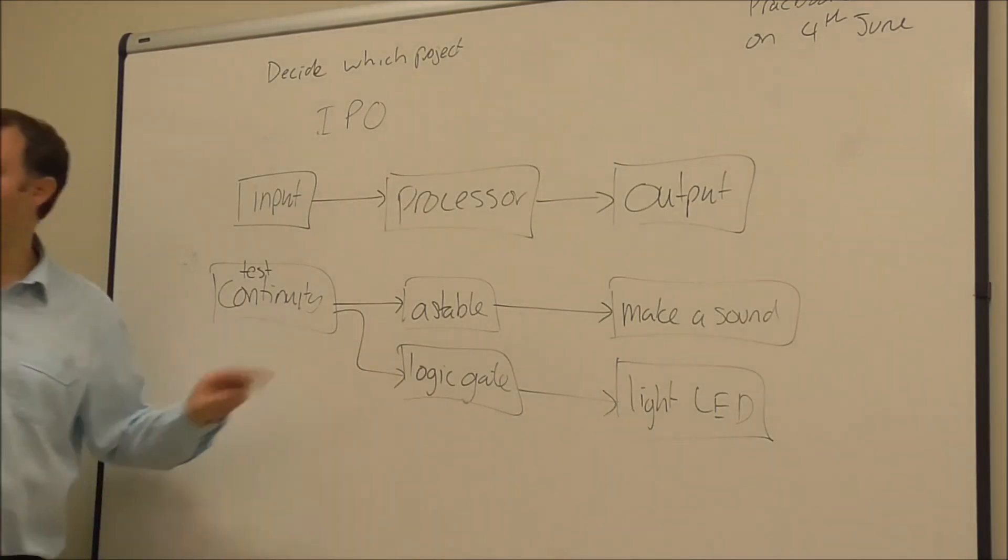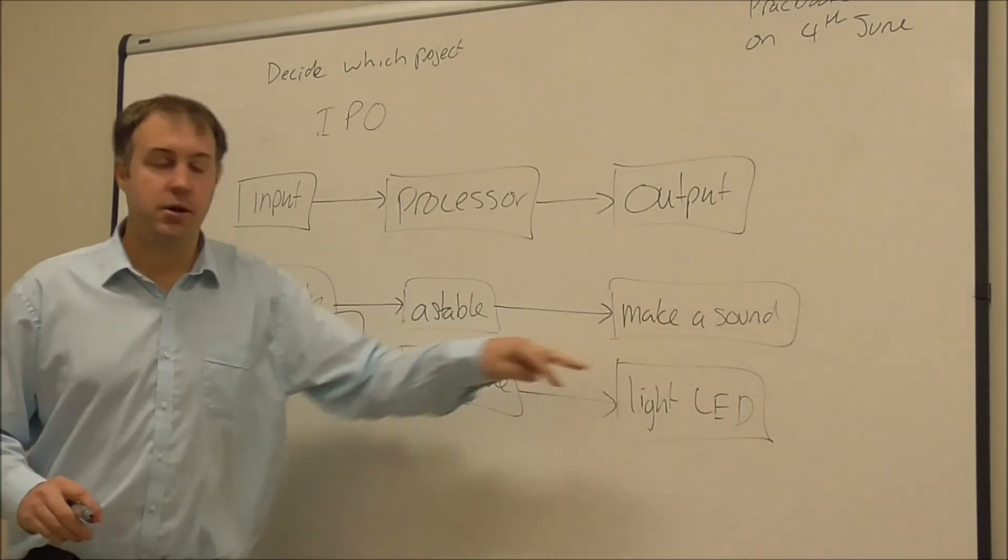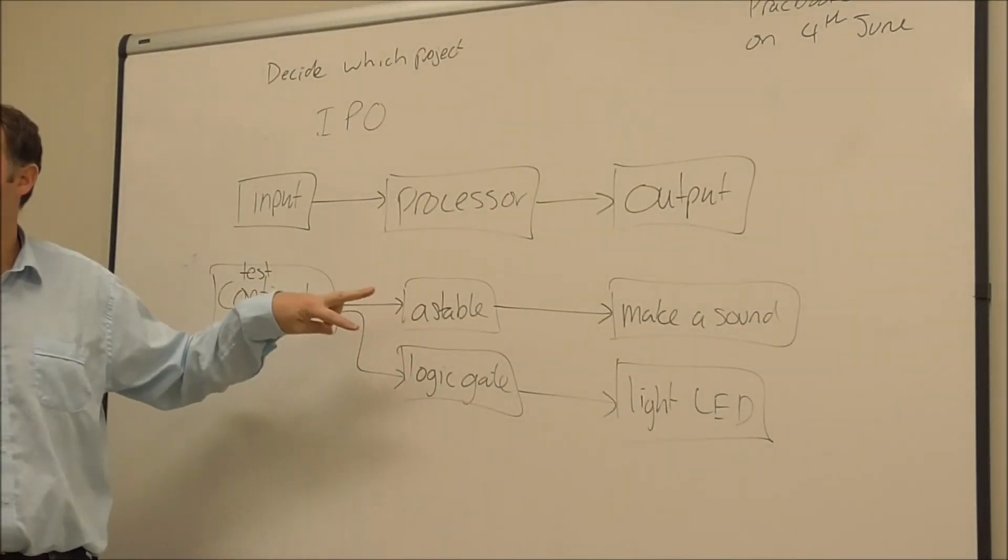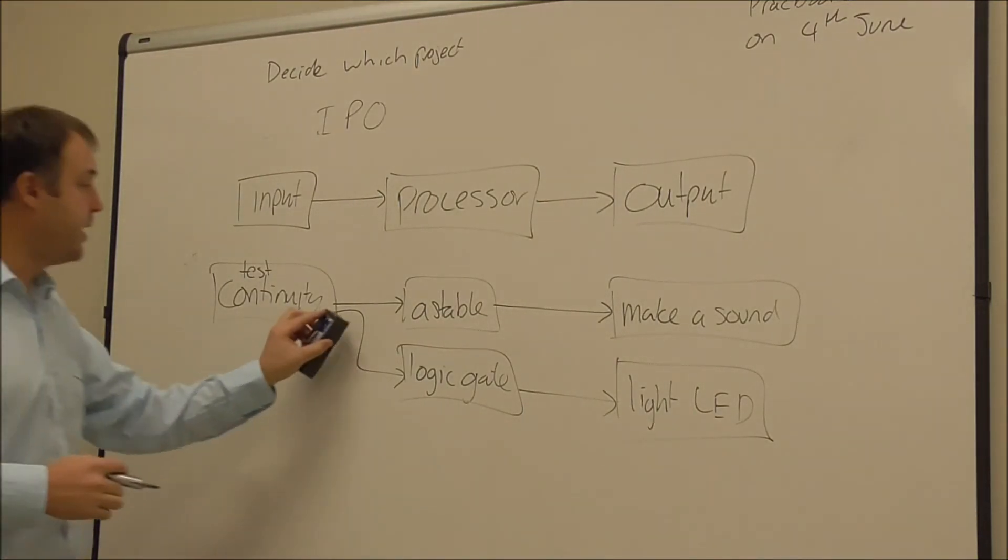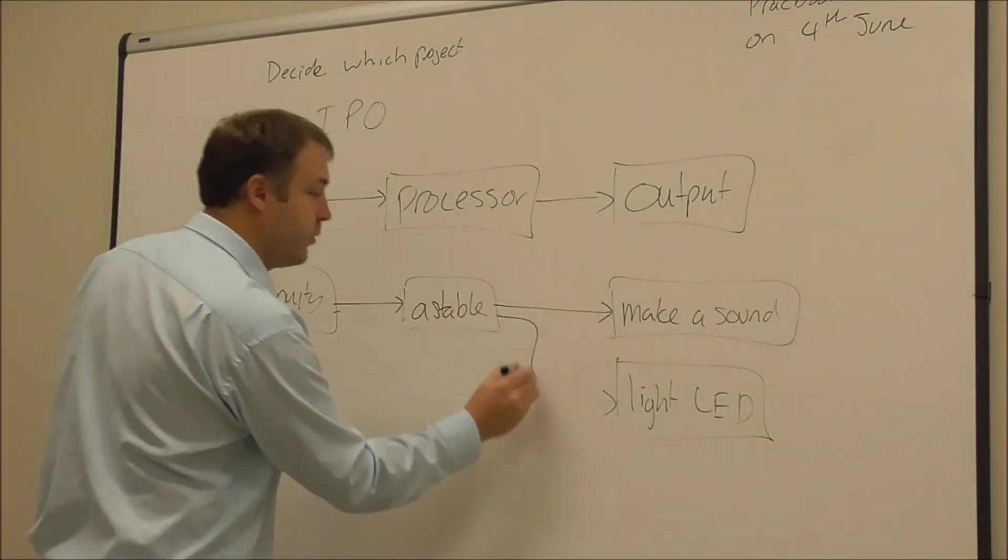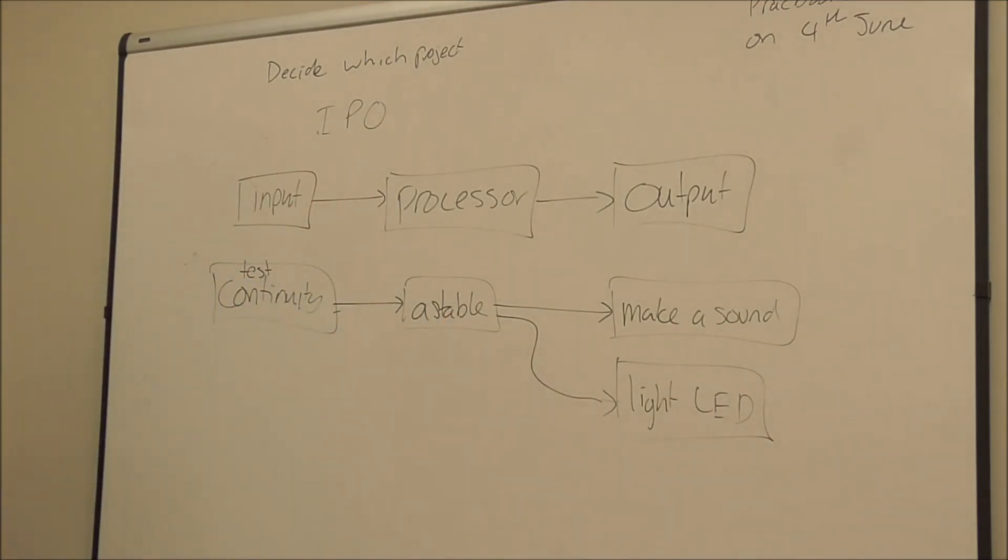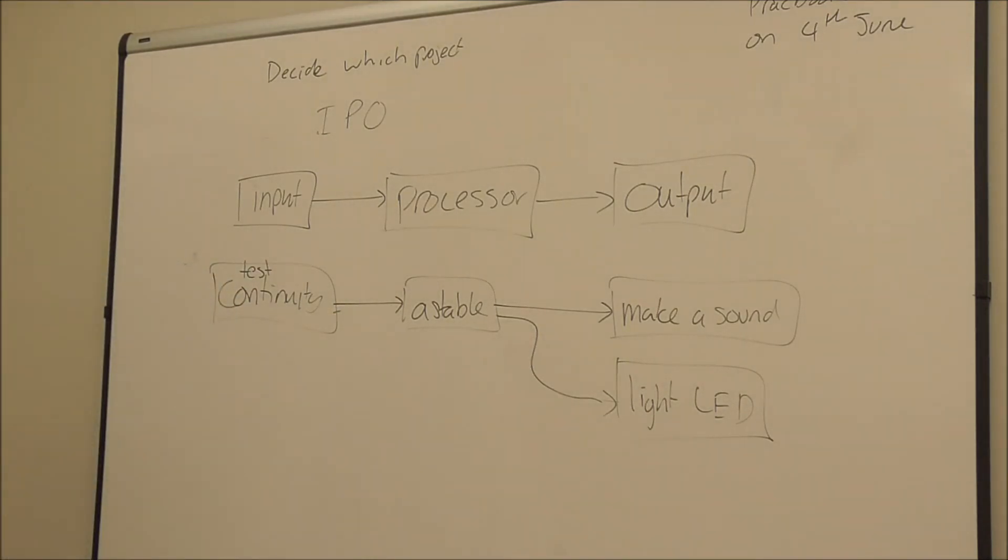However, your project might have one input, two outputs and two processors. Or, if I was actually going to make it the way that I was thinking about making it, I could have the astable light LED as well, although it would be flashing. But if it flashes fast enough, it looks like it's just on. So I could sort of exploit some other concepts like that.